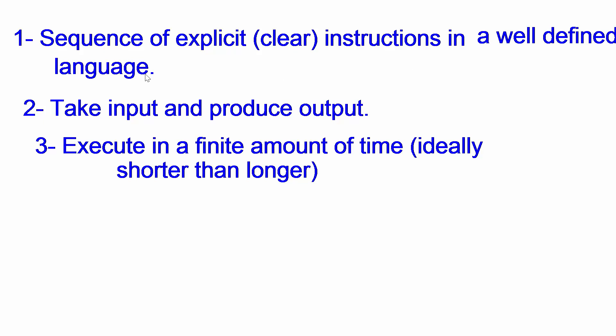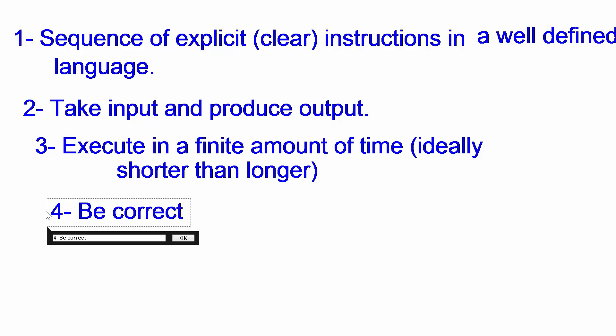That's the definition we're going to roll with: sequence of explicit clear instructions in a well-defined language, takes input, produces output, executes in a finite amount of time — ideally shorter than longer. Some other things we should mention: be correct. Sometimes an algorithm doesn't necessarily always have to be correct — we'll talk about it later. But generally, we want our algorithm to be correct. You can write an algorithm that solves the problem for most sets of input. I think this video is getting long enough. I wanted to clearly define what an algorithm is and what it will mean for us as we progress through this playlist. In the next video I'll talk about how learning algorithms can destroy your marriage.